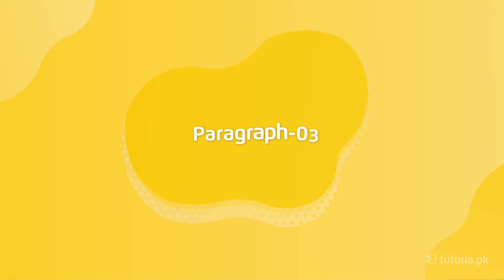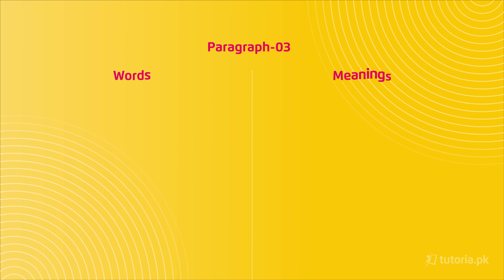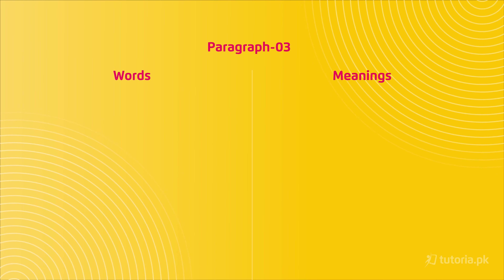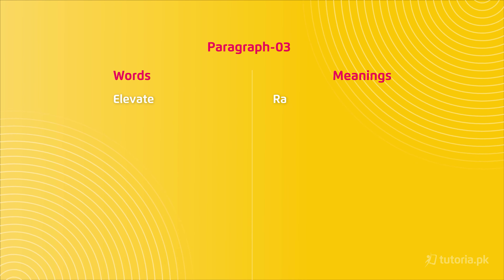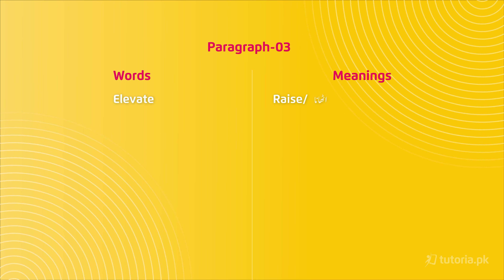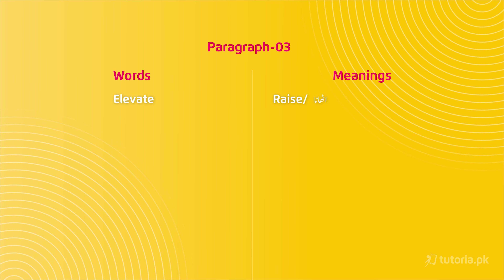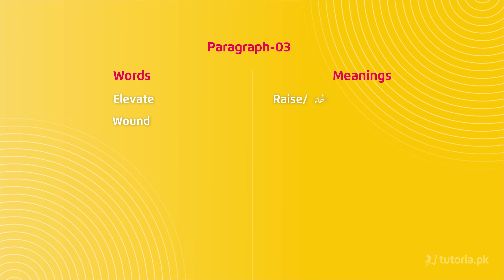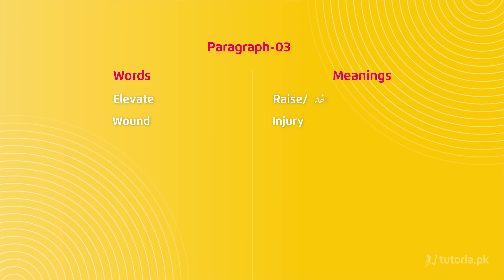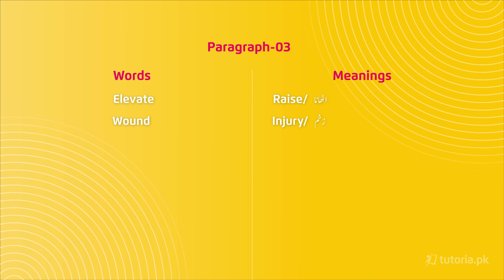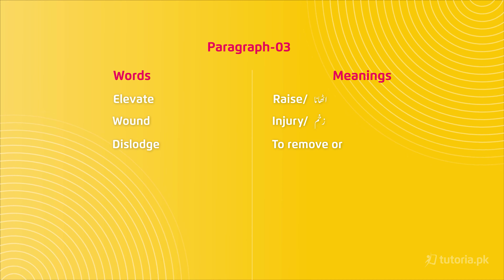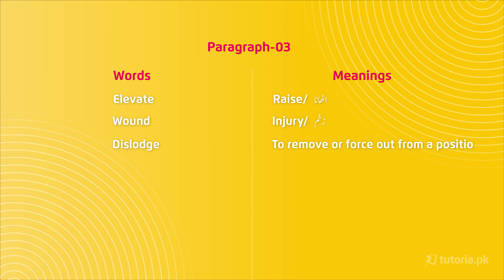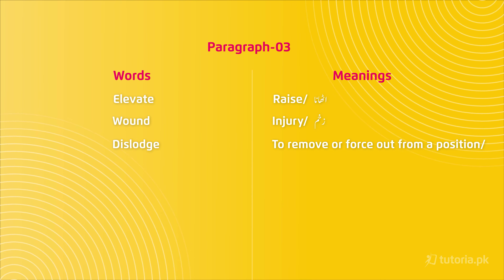We have come to the third paragraph of our unit. Let's discuss difficult word meanings first. First word is 'elevate,' which means raise or uthana. Second word is 'wound,' which means injury ya zakham. Third word is 'dislodge,' which means to remove or force out from a position.